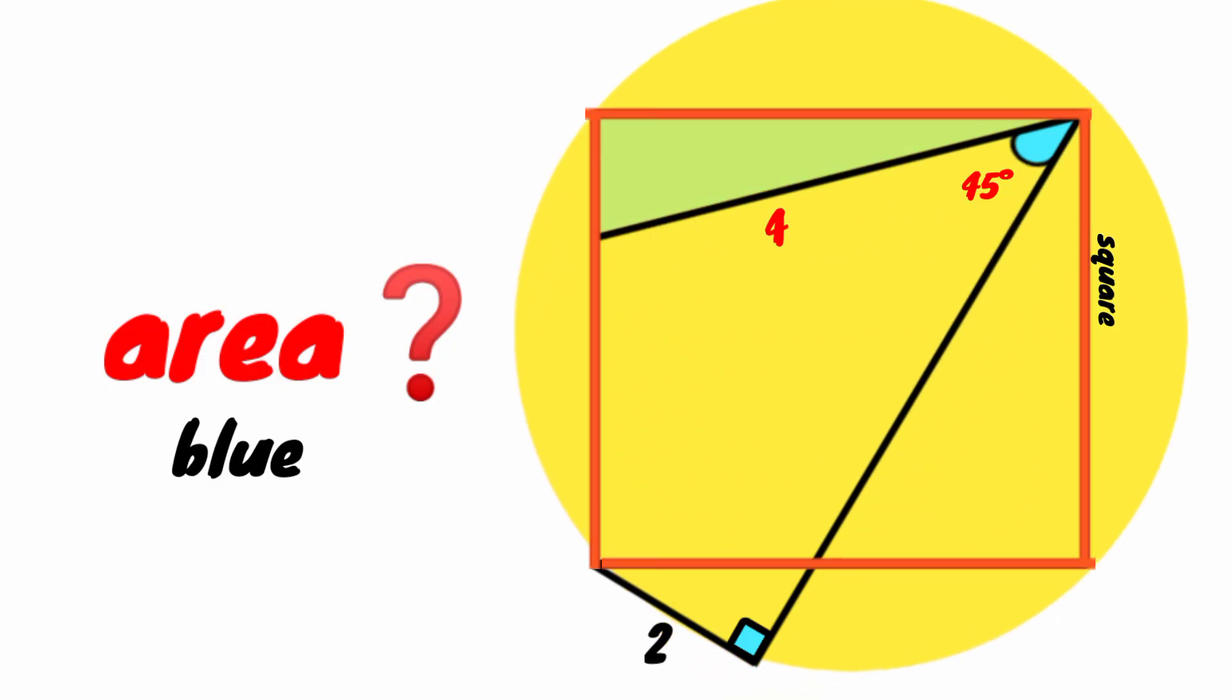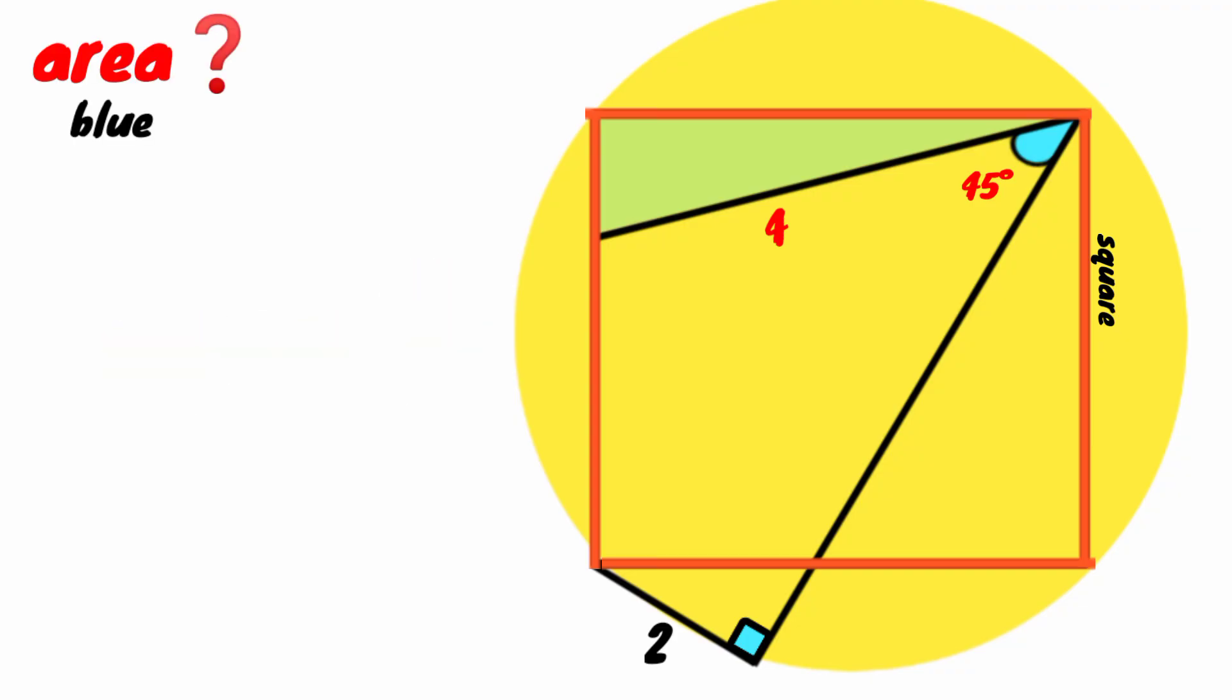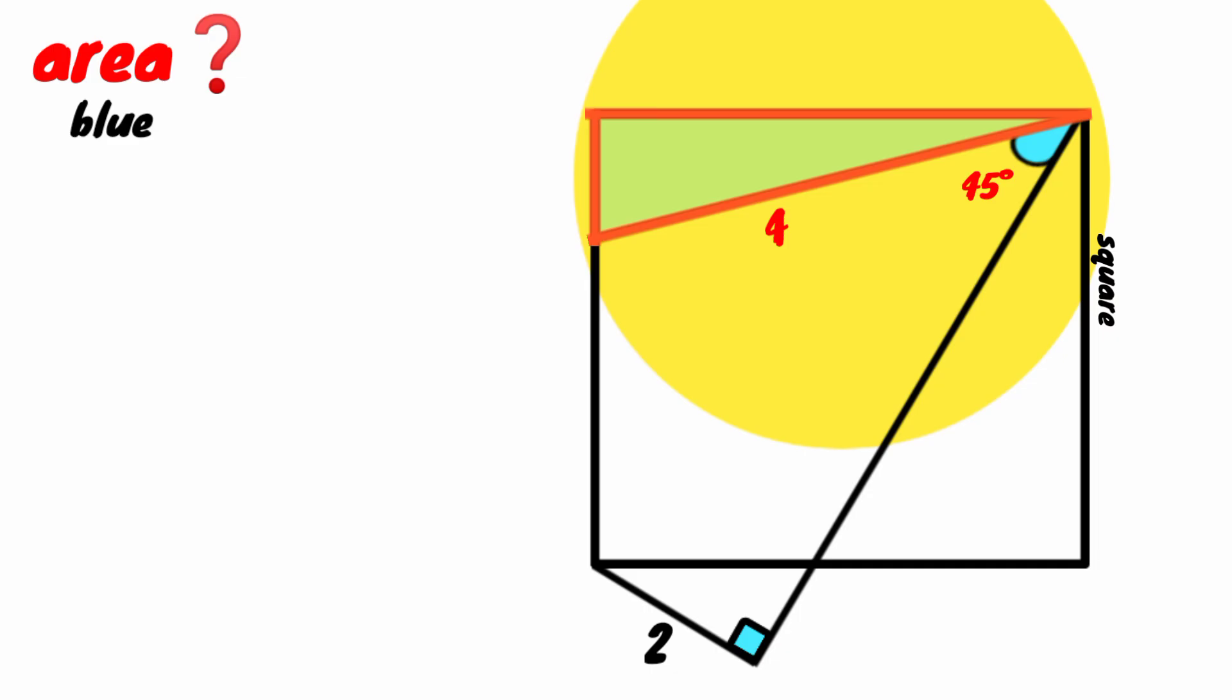This quadrilateral is a square-shaped quadrilateral. So how can we solve this? How can we calculate the area of this blue triangle? It is very simple. We label the point. So we are to calculate the area of triangle QRV.